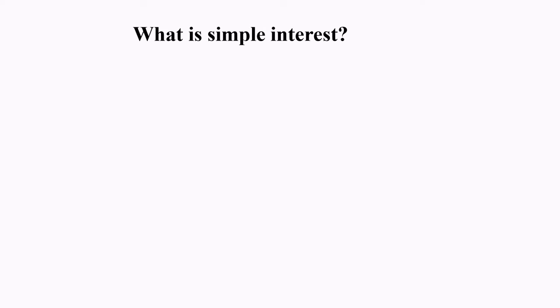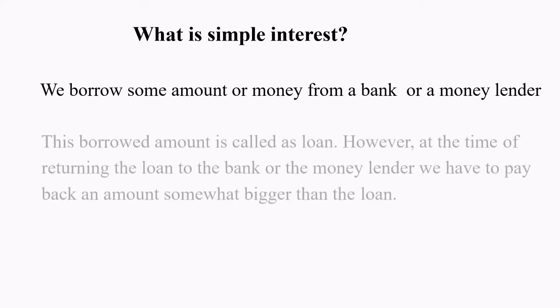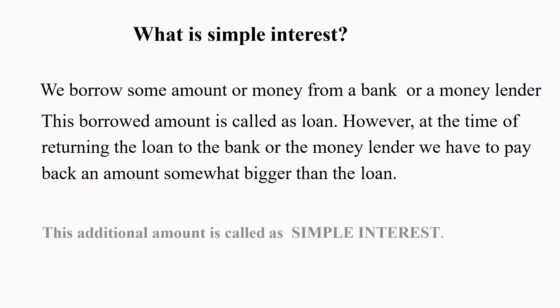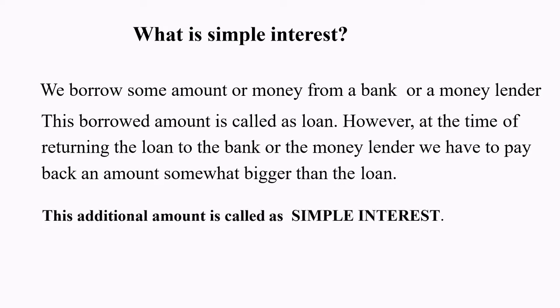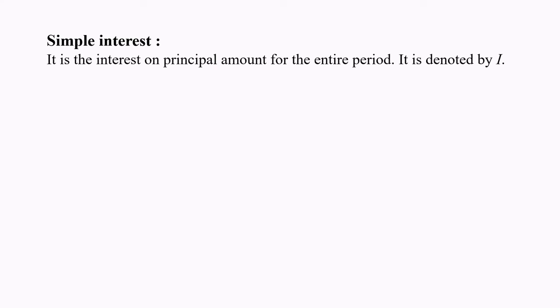Number 5: What is Simple Interest? We borrow some amount of money from a bank or a money lender. This borrowed amount is called a Loan. However, at the time of returning the loan to the bank or money lender, we have to pay back an amount somewhat bigger than the loan. The additional amount is called Simple Interest. It is the interest on the principal amount for the entire period. It is denoted by I.